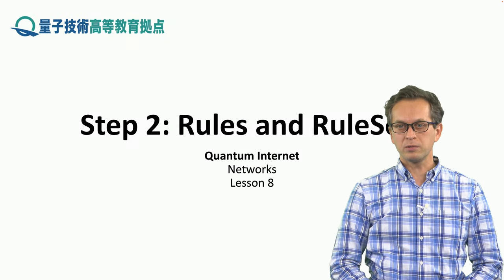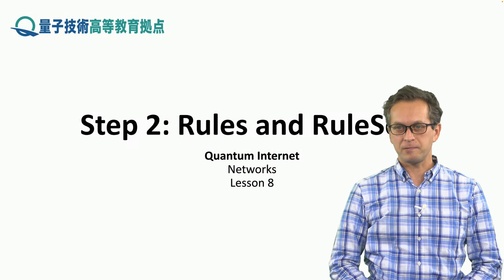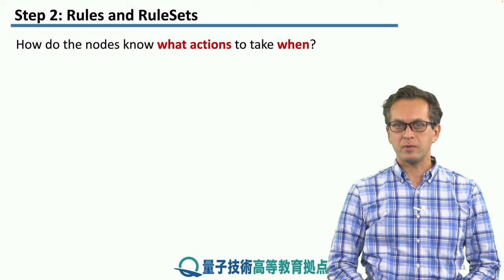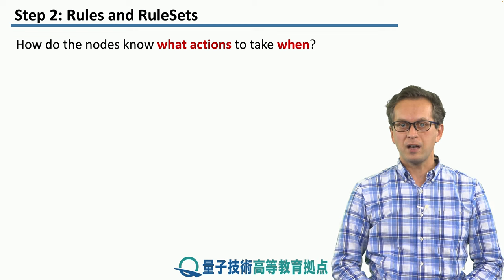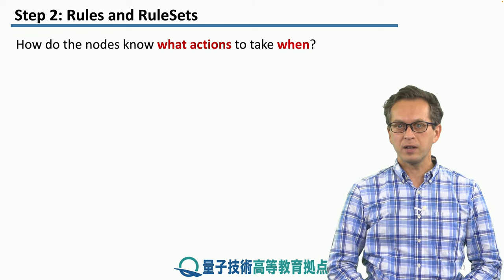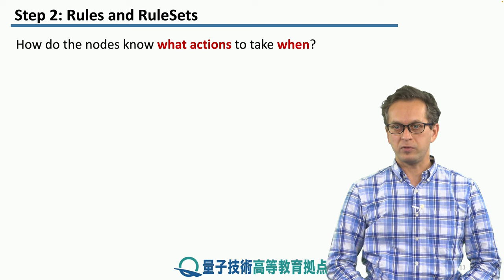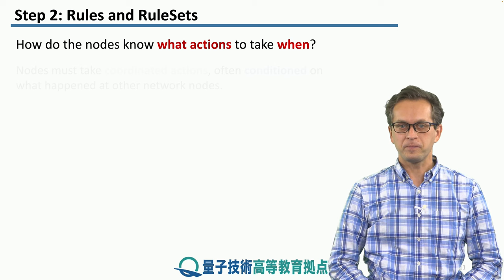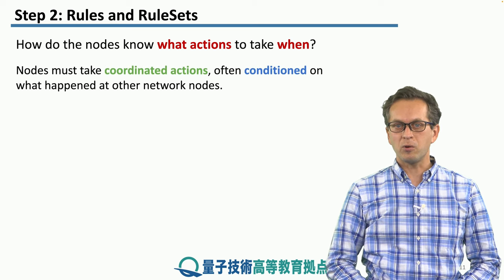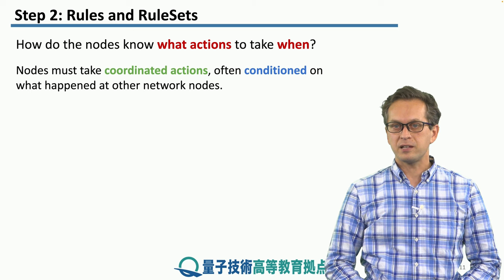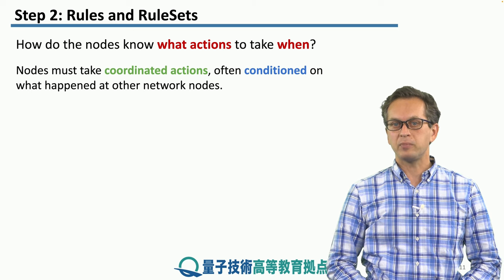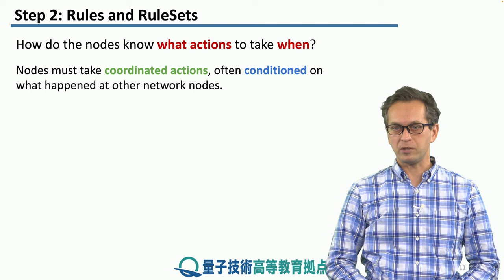Step 2: Rules and rule sets. In this step, we're going to think about the question: how do the nodes know what actions to perform and when to perform them? Nodes must take coordinated actions, and these actions are often conditioned on what happened at other nodes in the network.